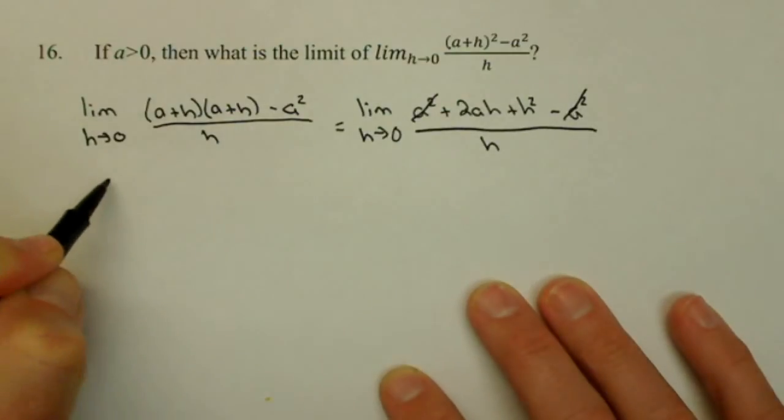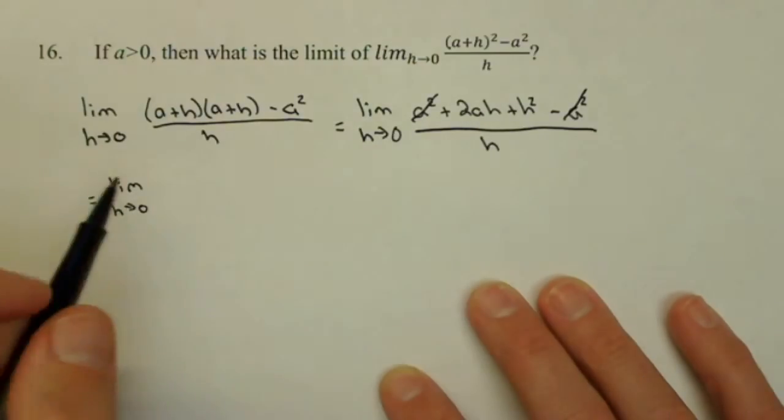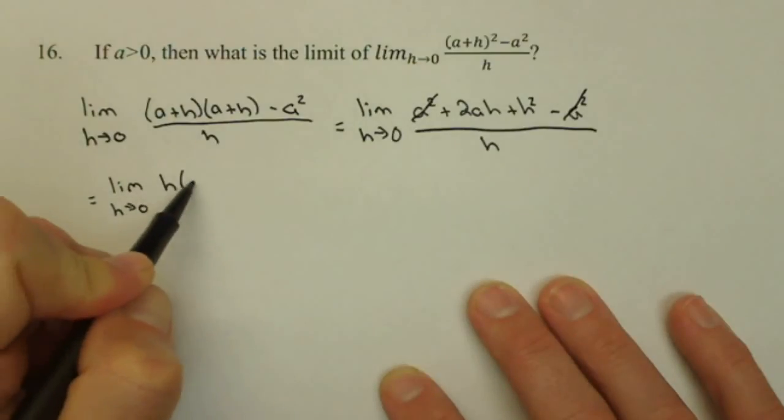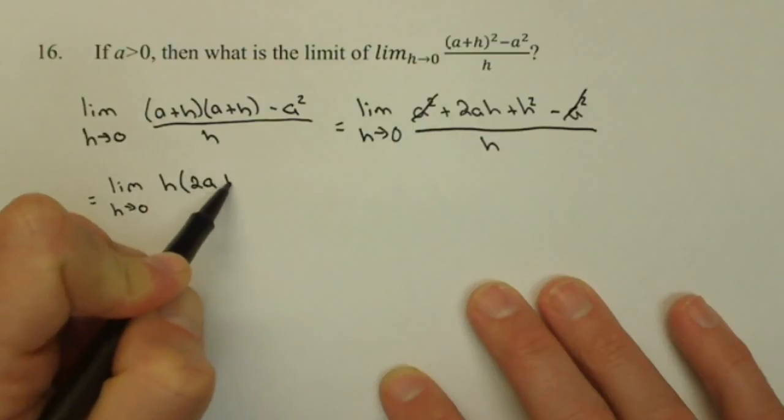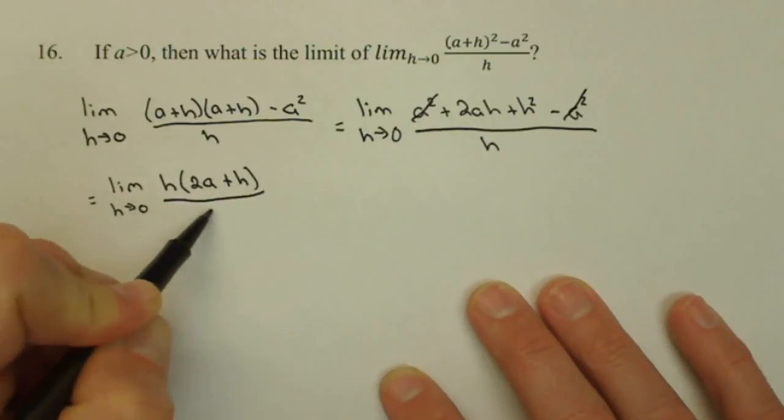So when I go to write my next line, limit as h approaches 0, I can factor an h out of that numerator and I get h times 2ah plus h over h.